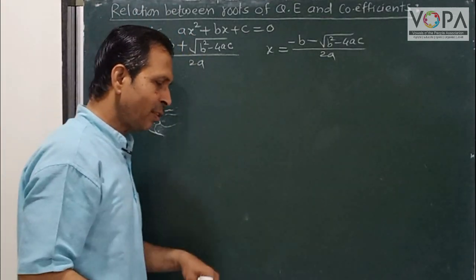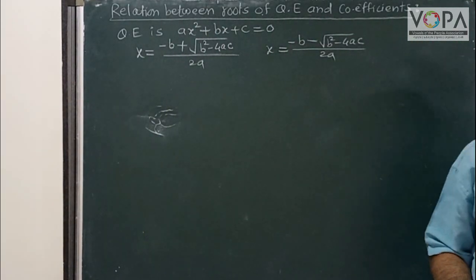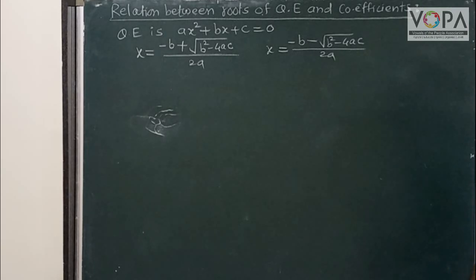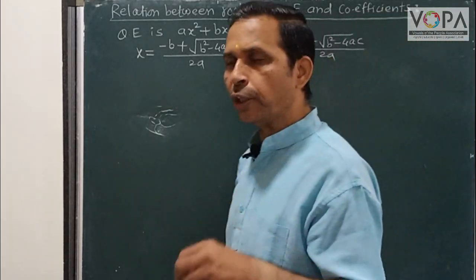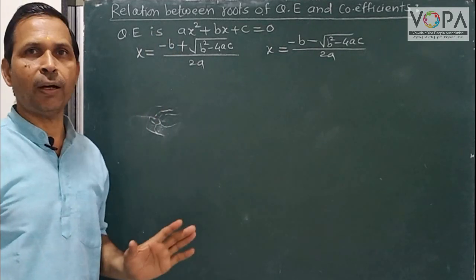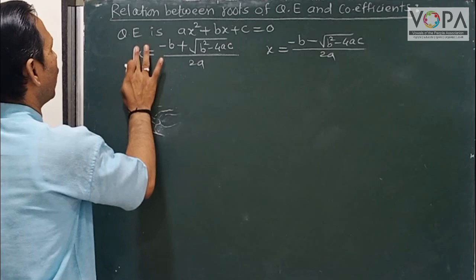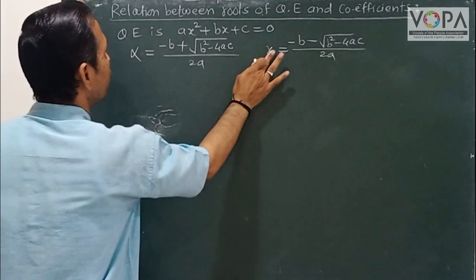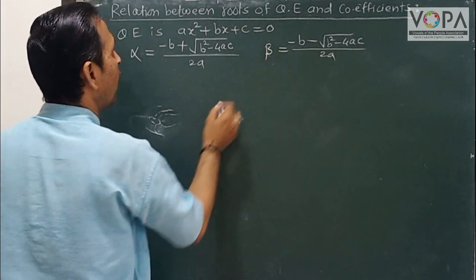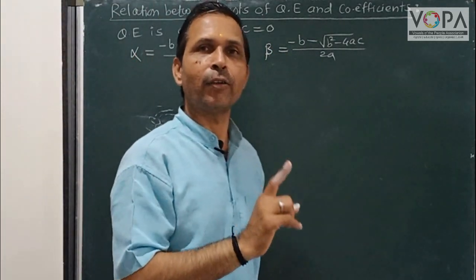Let's take these two values. The positive value, let's call it alpha (α), and this value, let's call it beta (β). So α and β are the two roots of the quadratic equation.